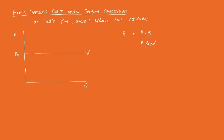If we derive an individual firm's marginal revenue function — marginal revenue is essentially the derivative of revenue with respect to Q — and since P doesn't change, this is equal to just P. So the marginal revenue under perfect competition is equal to P, as P is constant. Thus, for a perfectly competitive firm, a firm's MR curve is equal to the firm's demand curve, which in this case is equal to P. And that's the individual demand curve of a firm under perfect competition.